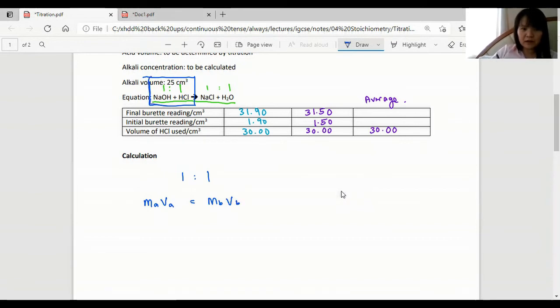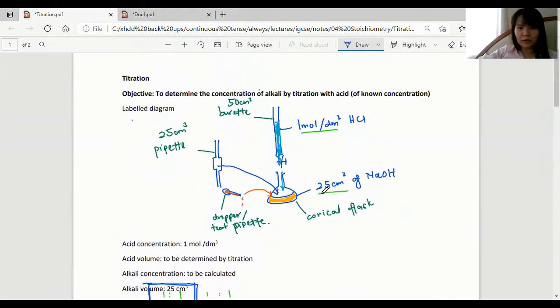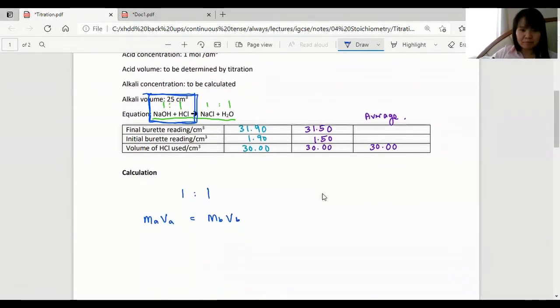So these ratios here, they are molar ratios. M acid is given up here, it's 1 mole per dm cubed.